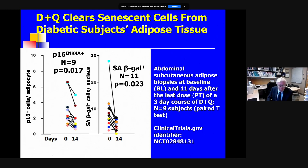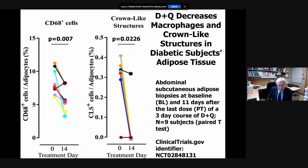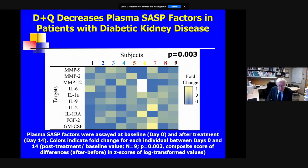We gave senolytics for three days. Dasatinib and quercetin have very short elimination half-lives — dasatinib is four hours, quercetin is eleven hours, fisetin which I'll talk about in a moment is three hours — so these drugs act in a hit-and-run fashion, and it takes a week to six weeks for new senescent cells to form. Eleven days after the last dose of senolytics when we re-biopsied these people, we found that p16 and SA-beta-gal-expressing cells were decreased in their adipose tissue, there was decreased activated macrophage infiltration and decreased fibrosis, and there was a decrease in a composite score of circulating SASP factors.